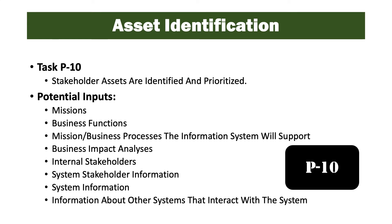Stakeholder assets are identified and prioritized in Task P10 Asset Identification. Potential inputs include mission, business functions, mission and business priorities the system will support, business impact analysis, internal stakeholders, system stakeholder information, system information, and information about other systems that will interact with the system.